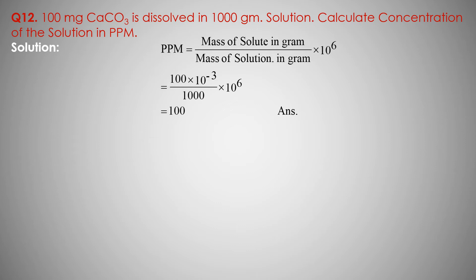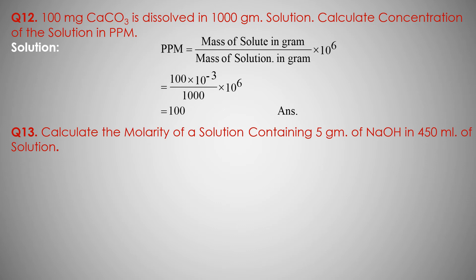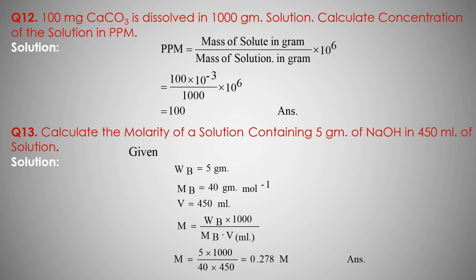This question is complete. Next question: Calculate the molarity of a solution containing 5 gram of NaOH in 450 ml of solution. Volume of solution V is 450 ml, and mass of solute W is 5 gram.